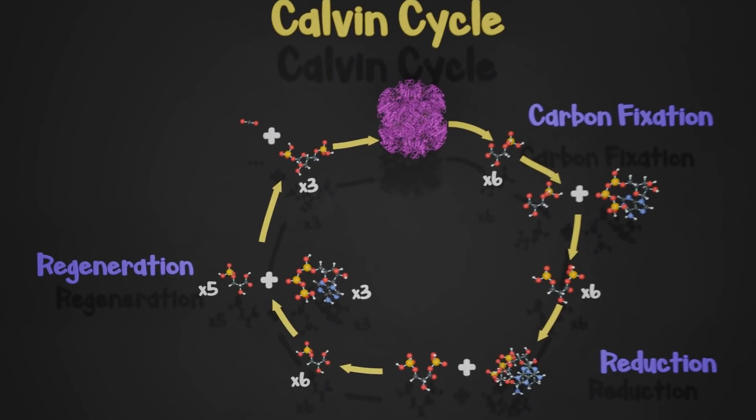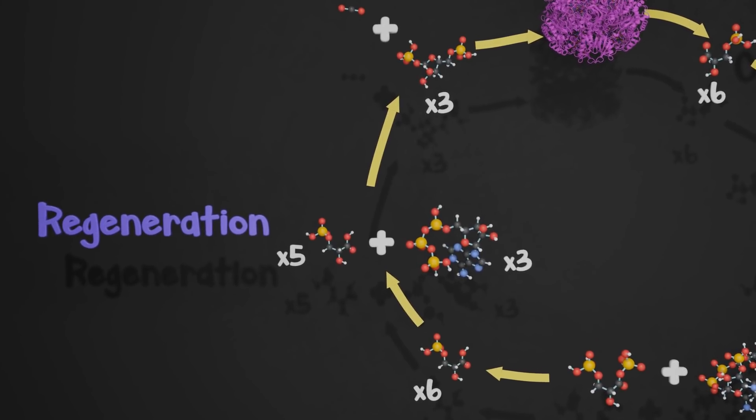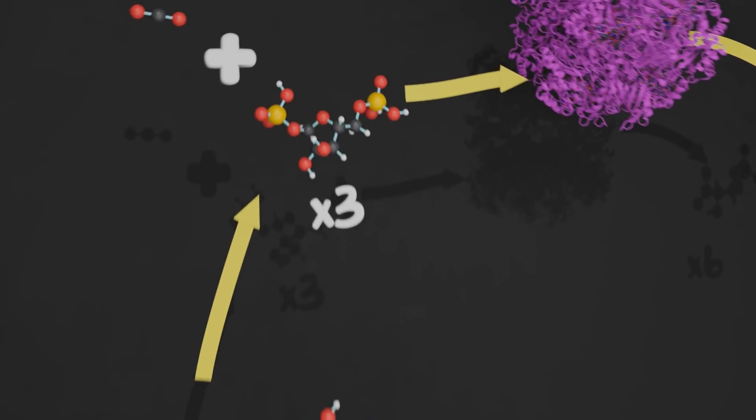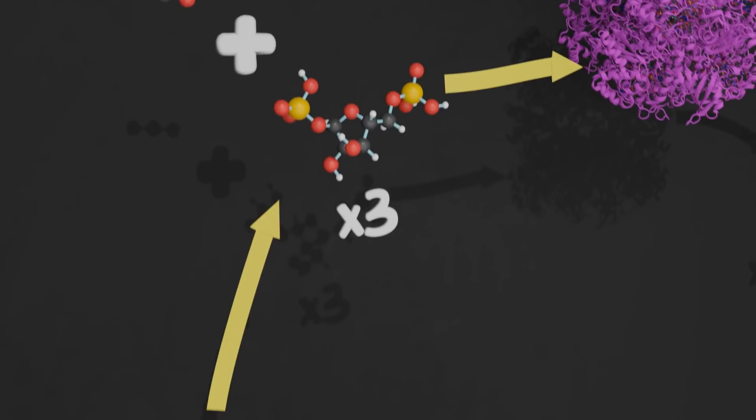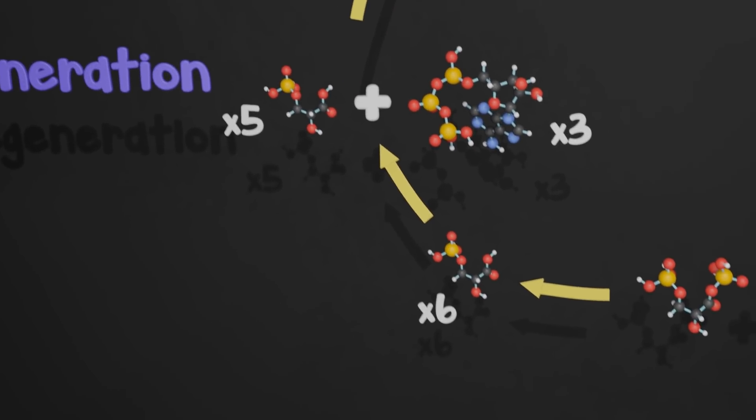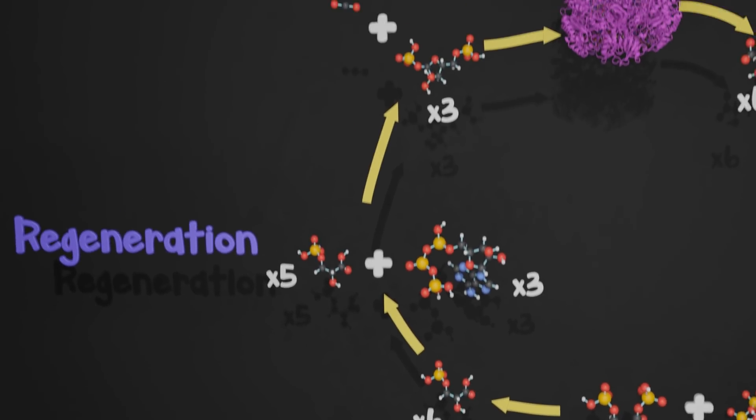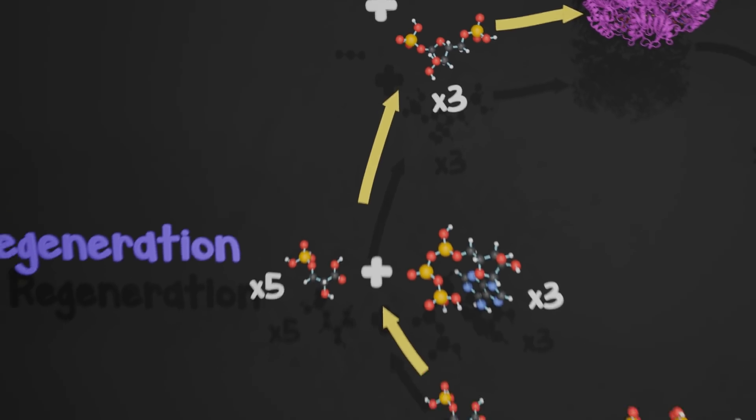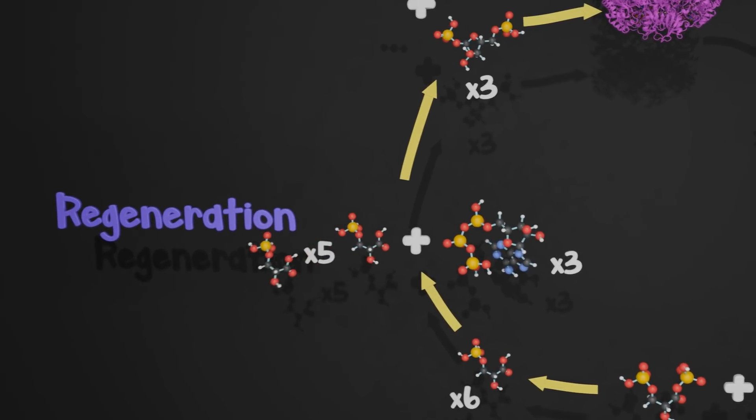In the final step, acceptor regeneration, we need to create the original ribulose sugars that started this cycle. We will soon discover we only need five of our six phosphoglyceraldehydes to reform our initial ribulose molecules. So our extra sixth goes off to make bigger sugars.